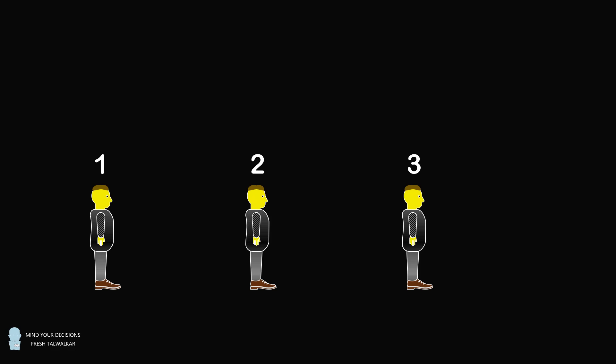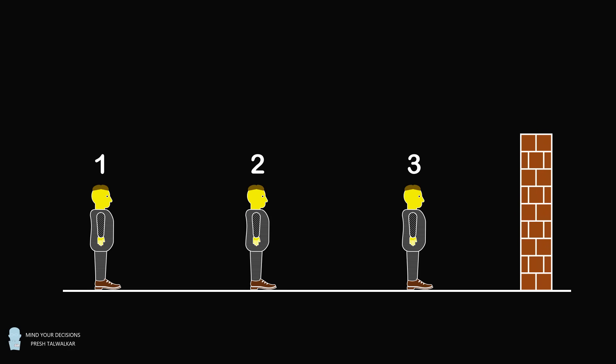The warden suspects they are innocent, but wants to check they actually are logicians capable of perfect reasoning. The warden devises a game. He lines up the prisoners in order 1, 2, and 3, and he has them facing a brick wall. Prisoner 1 can see prisoners 2 and 3, prisoner 2 can see prisoner 3, and prisoner 3 is only facing the brick wall.